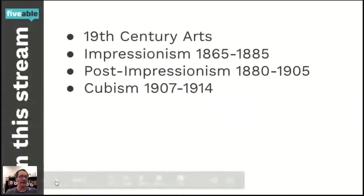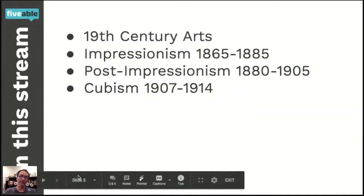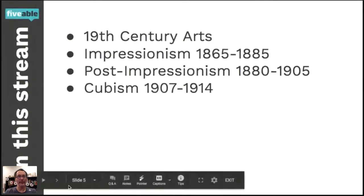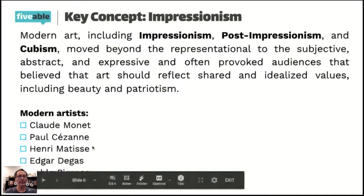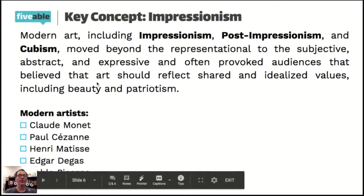On today's stream we're going to cover 19th century European art, kind of getting close to the 20th century — it's Period Four. Tonight, we'll talk specifically about Impressionism, a movement of art that originated in France, and we'll talk about Post-Impressionists, and finally about Cubism, which was created by Pablo Picasso. The College Board key concept outline indicates they're interested in modern art including Impressionists, Post-Impressionists, and Cubism — that's why I'm focusing on them.